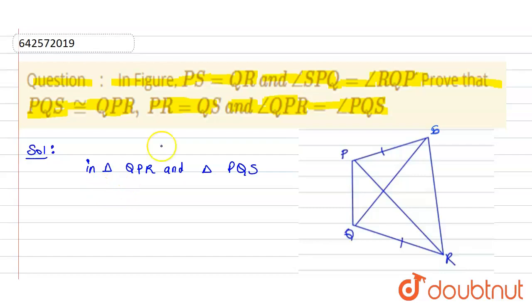what we have, we have given that QR is equals to PS. And one more thing that we have given is angle SPQ is equals to angle RQP.